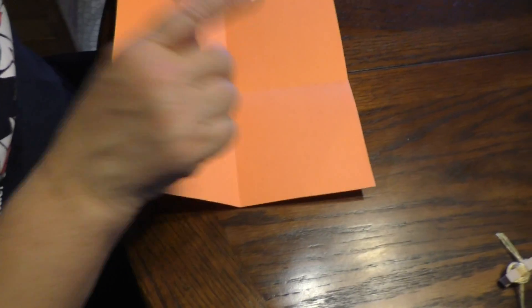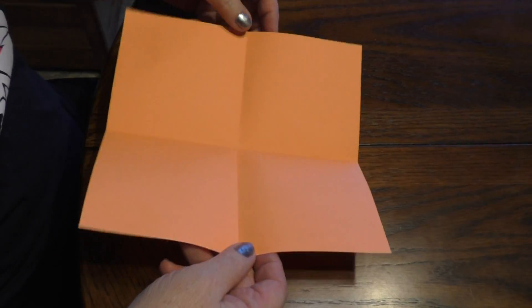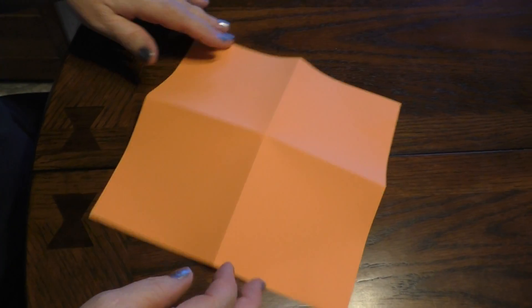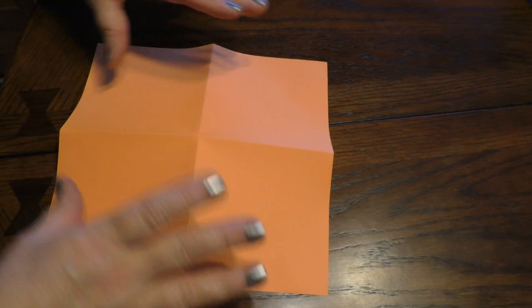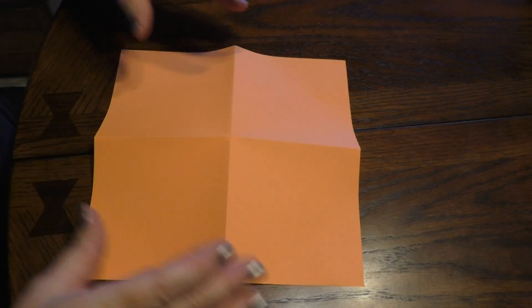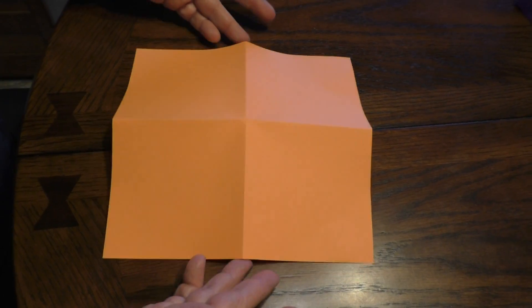Now, if you take a look, this is very important. This is a valley fold. Turn it over. This is the mountain fold. It has to be a mountain fold for it to fold itself. So if it stands up, you did a good job.